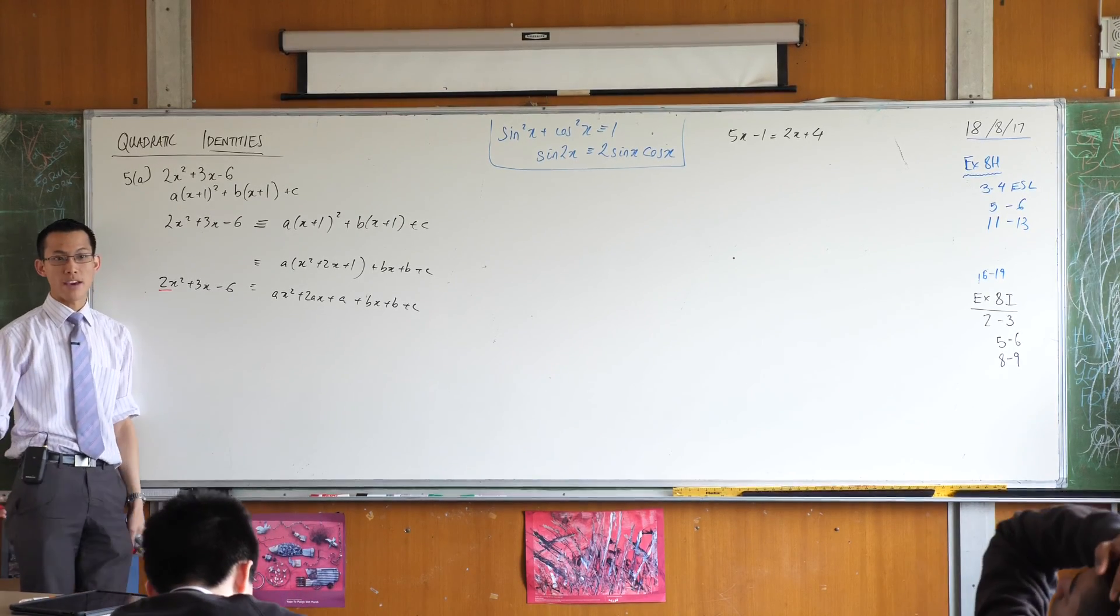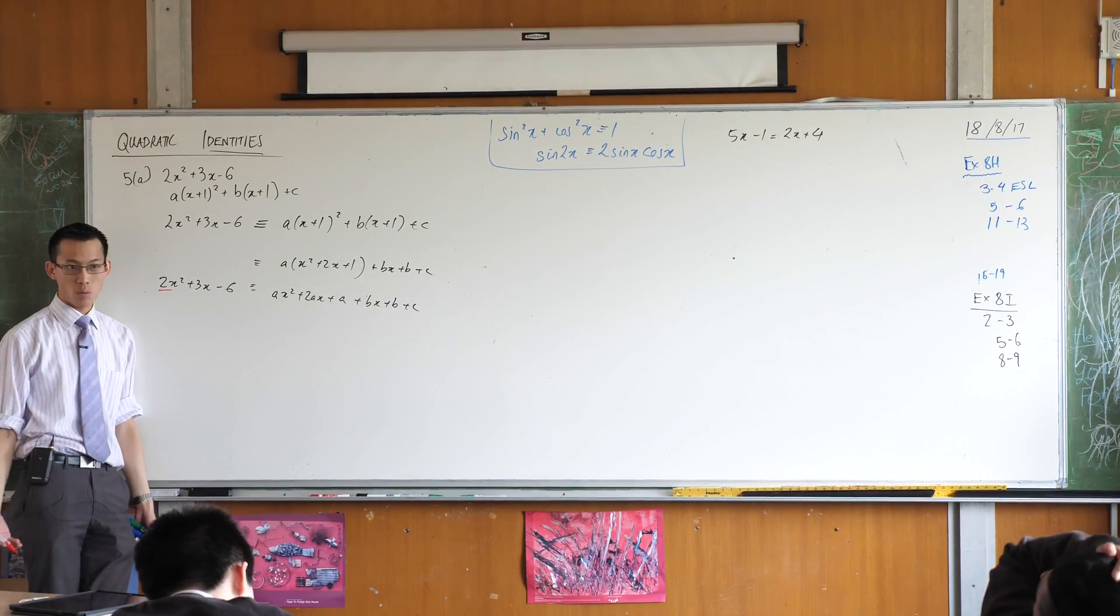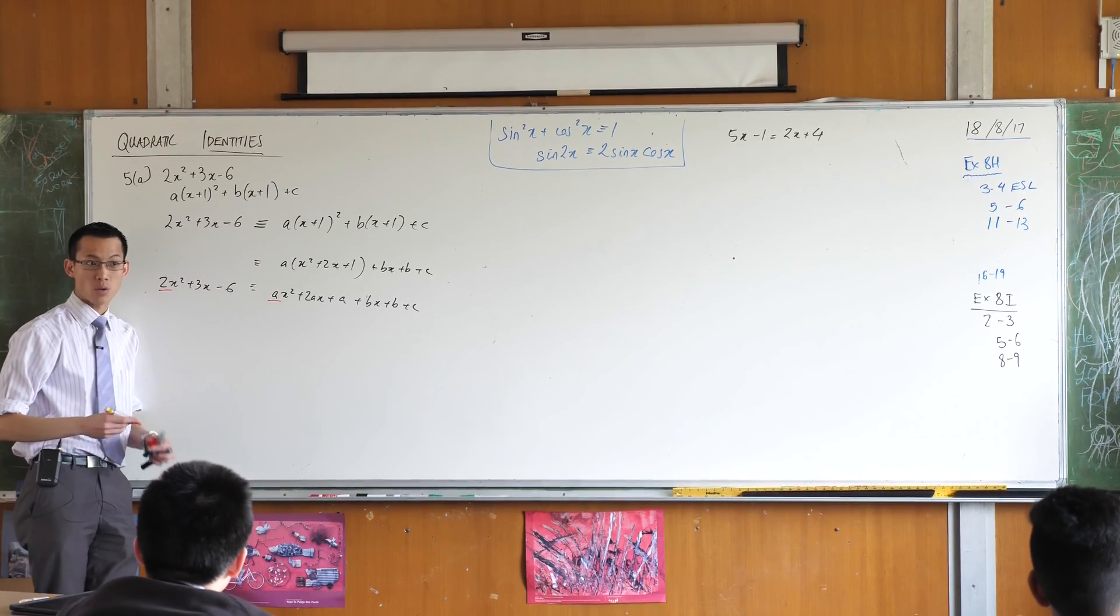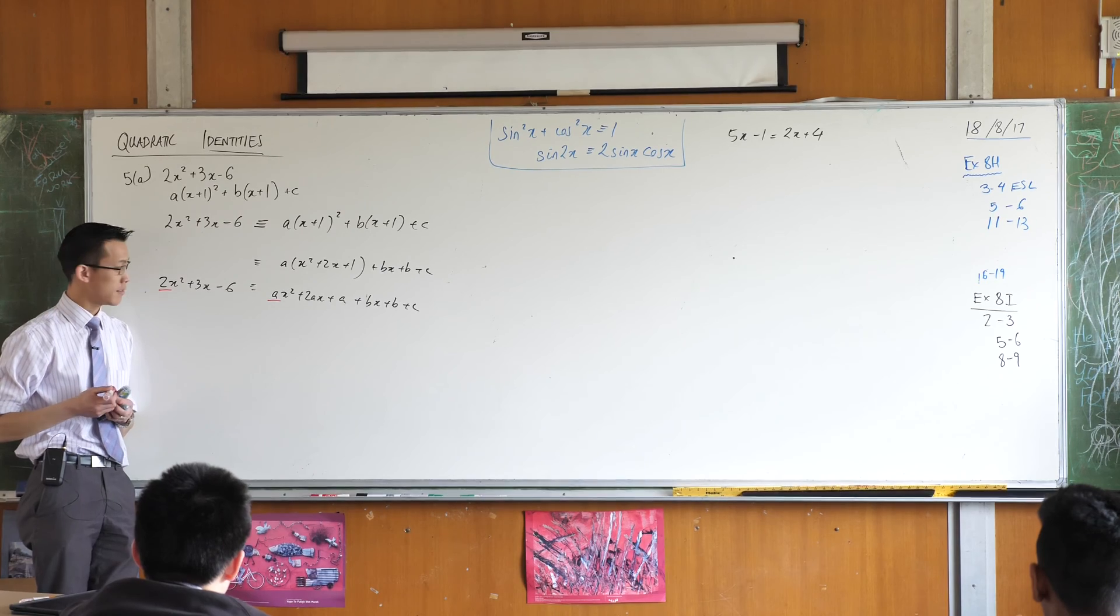When you have a look at the right-hand side, how many terms have x squared in them? Just the one term and there's the a right there. So you can see, comparison of coefficients for the x squareds is quite nice and simple. That's good.